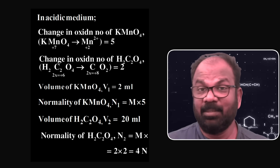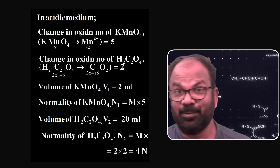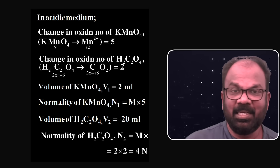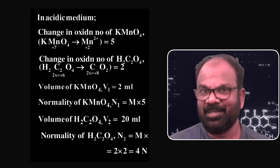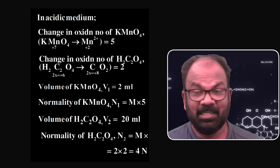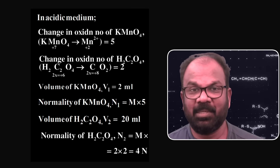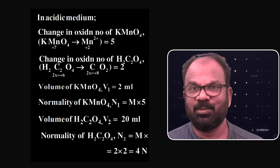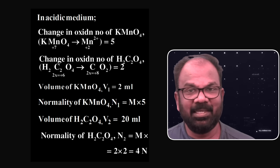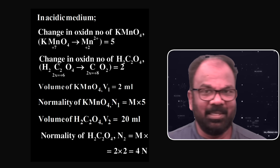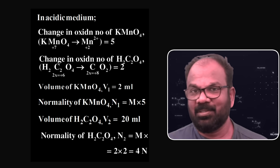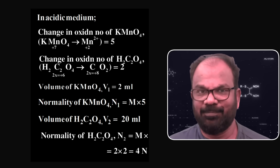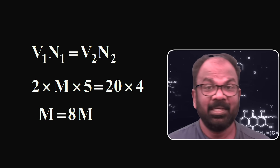Here, we need to find out the molarity of KMnO₄ solution, capital M. The volume of oxalic acid solution used for the titration is given: V2 is equal to 20 ml. The normality of oxalic acid solution, N2, is equal to its molarity × X — molarity is 2 and the change in oxidation number X is equal to 2. Therefore, normality N2 is equal to 4.